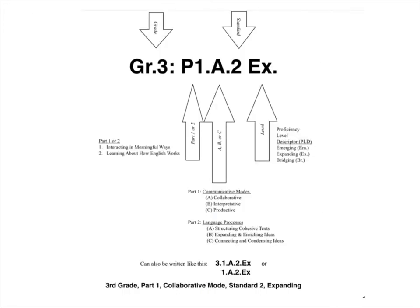I'd like to show you how to write an actual grade-level ELD standard. This example comes from grade 3. Then we need to identify which part: Part 1 — the cool colors, interacting in meaningful ways — or Part 2 — the warm colors, learning about how English works.